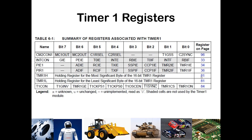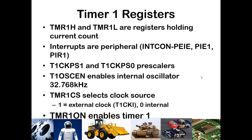TMR1H and TMR1L are the registers holding the count, and you have prescalers on the two bits shown. Timer 1 also supports an internal low-frequency oscillator running at 32 kHz, which allows for much slower timing if the instruction clock is too fast. That is another option you can associate with Timer 1, in addition to the external T1CKI input. To use Timer 1, you must set the TMR1ON bit.